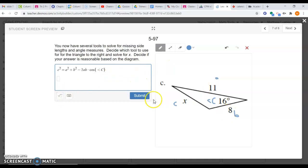Then I plug in my variables. My little c was x, so this becomes x². My A value is 11, so 11². B value is 8, so 8², minus 2 times A, which is 11, times B, which is 8, times the cosine of capital C, which is 16 degrees.